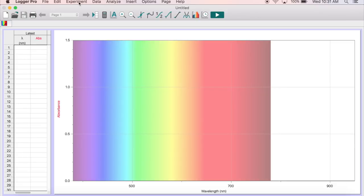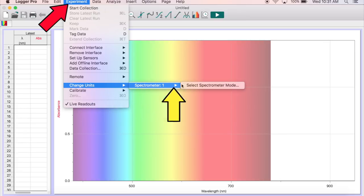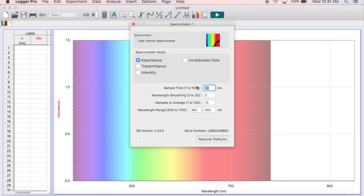The default setting on LoggerPro is Absorbance vs Wavelength. This needs to be changed to Intensity vs Wavelength. To do this, click on the Experiments tab at the top of the page, and from the drop-down menu select Change Units, Spectrometer 1, and then pick Intensity.